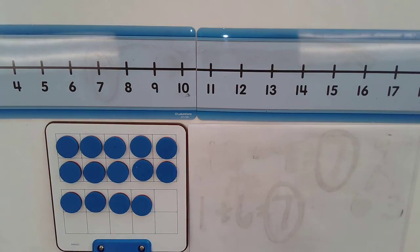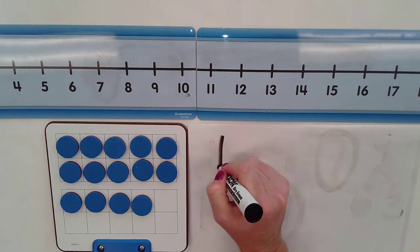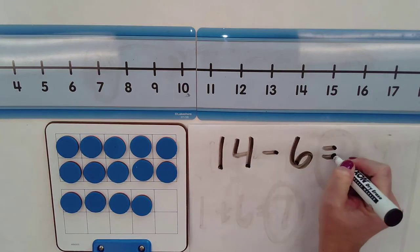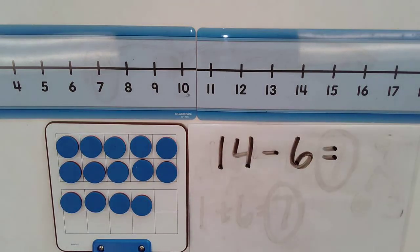So this 10 frame is going to help us answer the problem 14 minus 6. So I have 14 here on my 10 frame, and I know that because I have one 10 frame filled up, and then I have 1, 2, 3, 4. So I have one 10 and four 1s, which gives me 14.